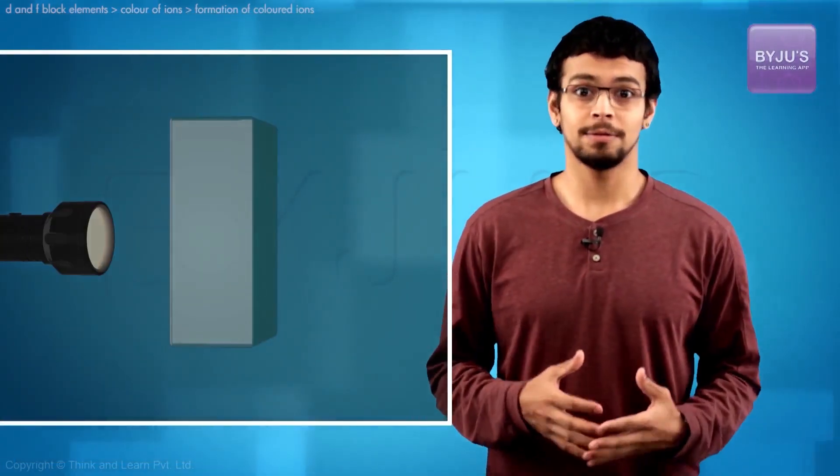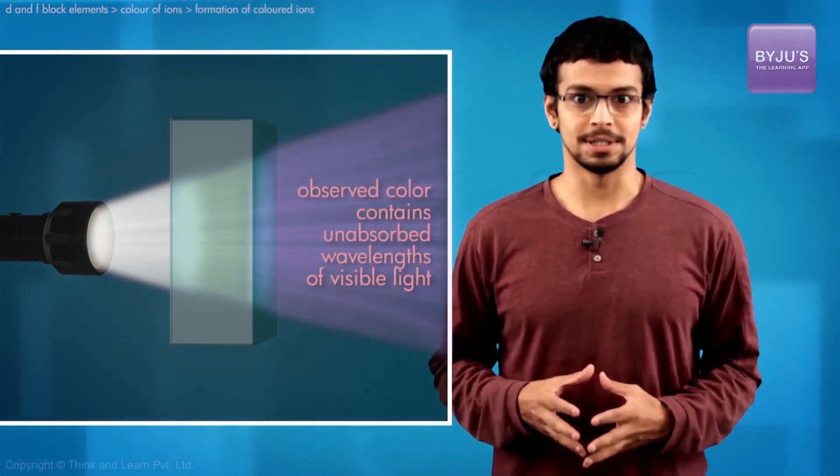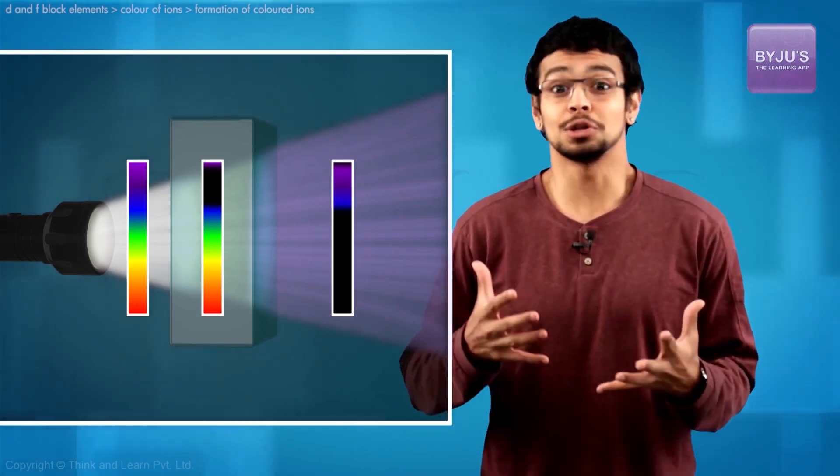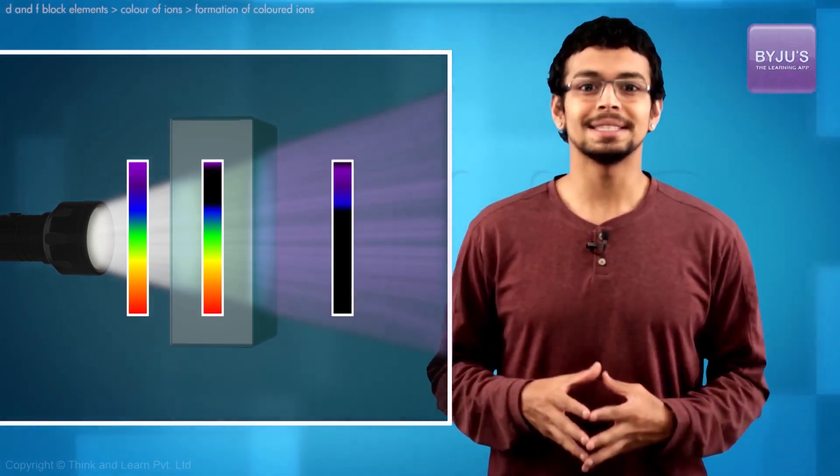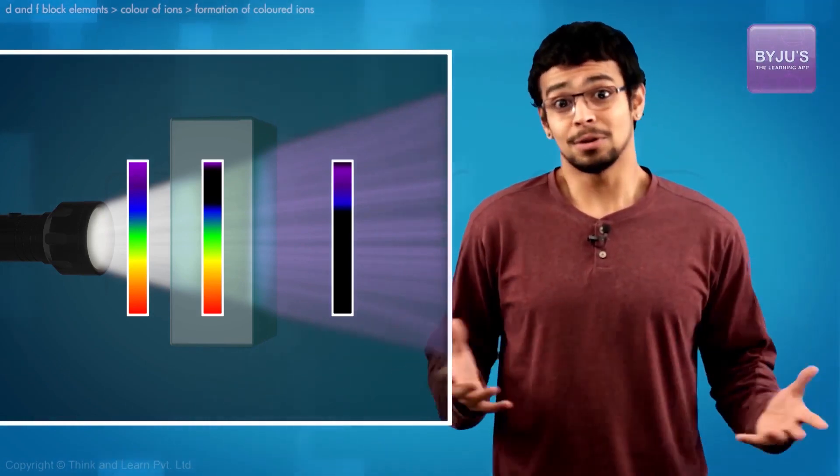The unabsorbed light falling into visible spectrum is what we perceive as the color of the substance. That is, if we see that a solution is purple in color, that means that yellow light has been absorbed by the substance and purple's let out.